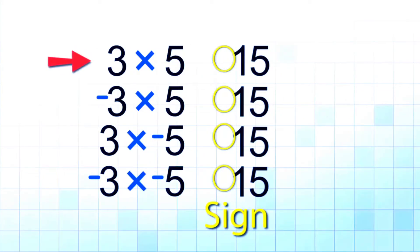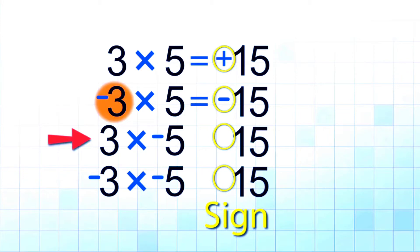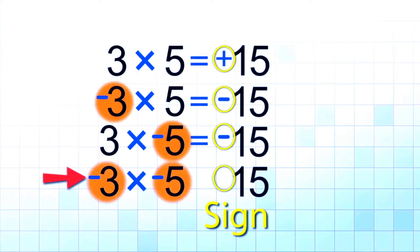If the number of negative factors is odd, the product is negative. So in this case: both positive gives positive 15. With one negative — negative 3 times 5 — that is negative 15. Next, 3 times negative 5 is also negative 15. For the last part, we have a pair of negative factors, so therefore negative 3 times negative 5 is equal to positive 15.